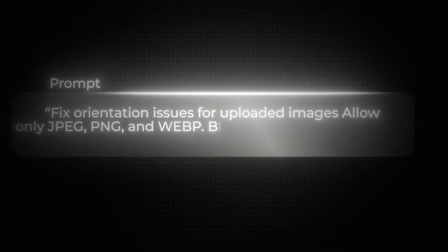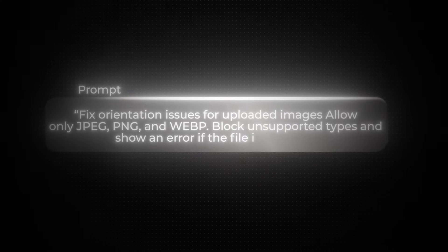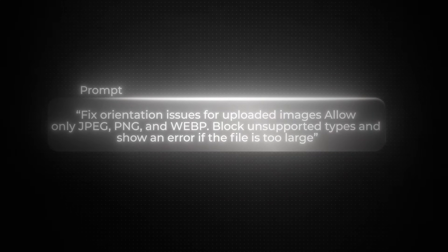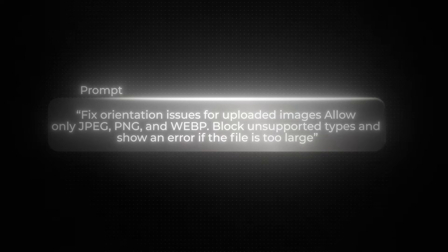Once that's sorted, let's go back to improving the image upload flow. At first it was a mess — the preview didn't show properly, orientation was off, and certain file types like weird camera formats would crash the upload. Let's send Replit a few specific prompts: fix orientation issues for uploaded images, allow only JPEG, PNG, and WEBP, block unsupported types, and show an error if the file is too large. After a few rounds, it's finally working — the app now handles uploads smoothly, gives instant previews, and provides helpful messages when something goes wrong.